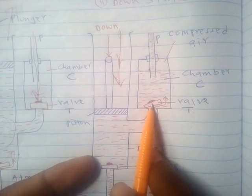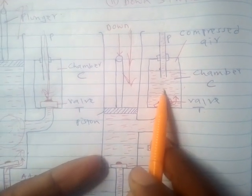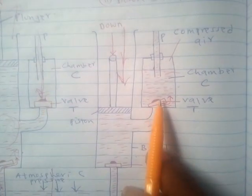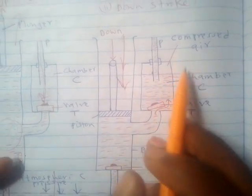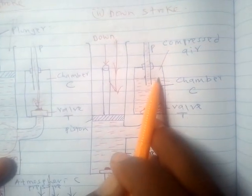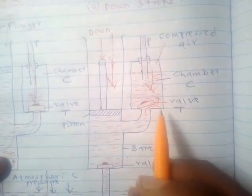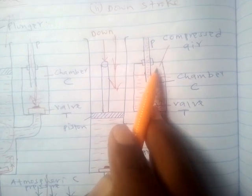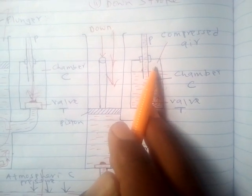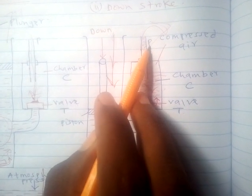During the next upstroke, valve T closes because of its weight and the weight of the water above it. During the next downstroke, the compressed air in chamber C causes the water level to drop, so the air above expands, creating a pressure difference, and water flows out through P continuously.